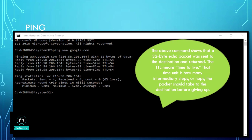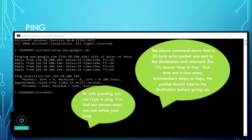The ping command shows that a 32-byte echo packet was sent to the destination and returned. The TTL means time to live — that is how many intermediary steps or hops the packet should take to the destination before giving up. As with ipconfig, you can type in ping hyphen question mark to find out various ways you can refine your ping.